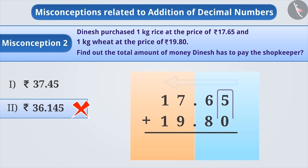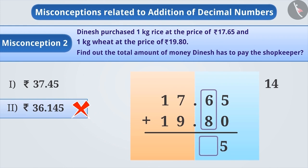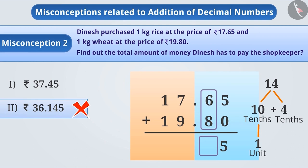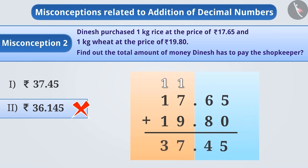First, we must add 5 and 0, whose sum is 5. This is written below 5 and 0. Similarly, the sum of 6 and 8 is 14. Even though there are two digits, we have to write only one digit in the result. So, we can take out 10 tens from 14 and make one group. Since 10 tens is equal to one whole or one unit, we will add 1 in the units place and the remaining 4 will be written in the tens place. Solving it this way, we get the result as Rs. 37 and 45 paise.